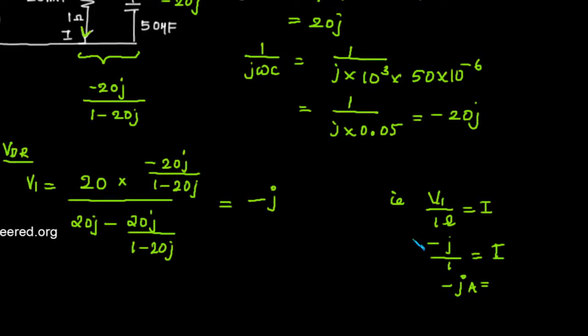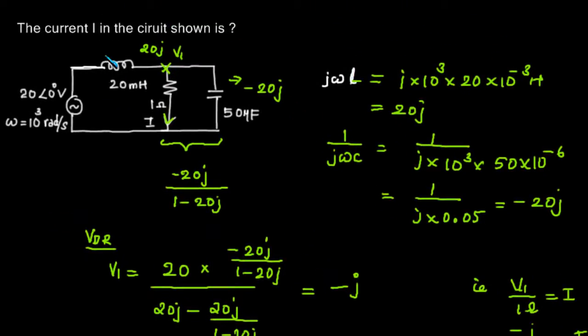So this was asked in electrical. First we have to find out what is the impedance offered by 20mH and by this capacitor. We have found out that, then we have found out what is the potential here to find out the current through this resistance easily, so we have gone for voltage divider rule.